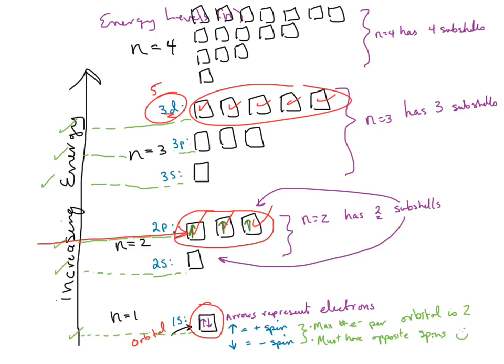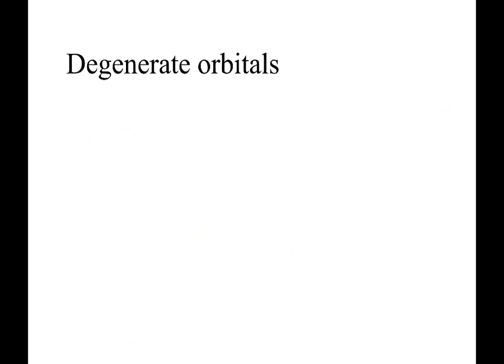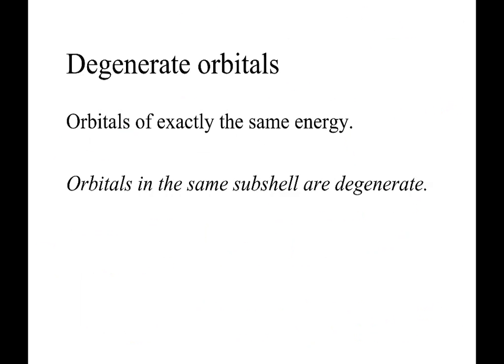And these five orbitals are degenerate, so electrons in there would have the same energy. So that's all to say then, I'll go back to your slides. Degenerate orbitals are orbitals or boxes that are in the same subshell, just like I showed you.